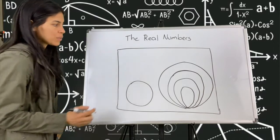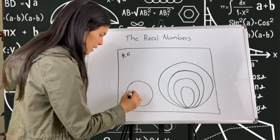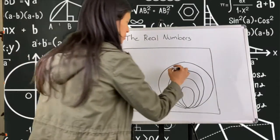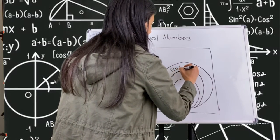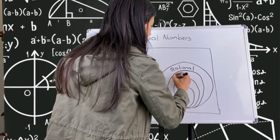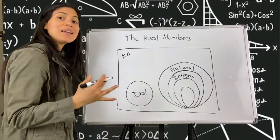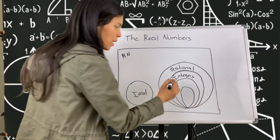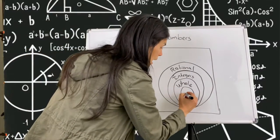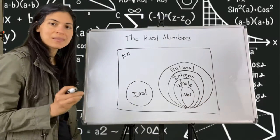Another way to visualize real numbers is with the following graph. The real numbers consist of all the irrationals and all the rationals. Within the rational numbers we have the integers — all the whole numbers and the negatives including zero. Then we have the whole numbers, which do not include the negatives and start on zero. And then we have the natural numbers, which don't include zero and include only the positive whole numbers.